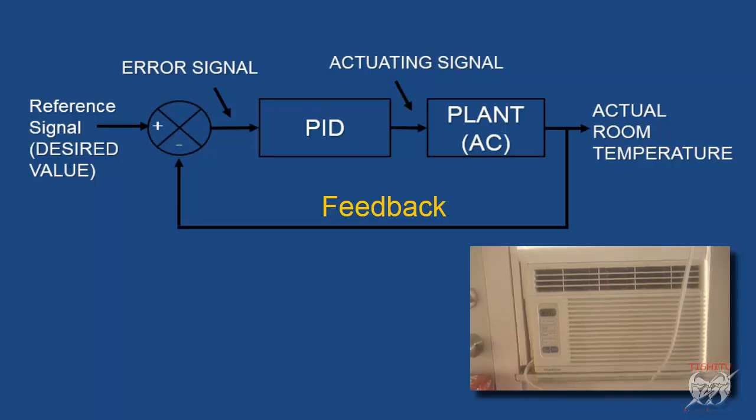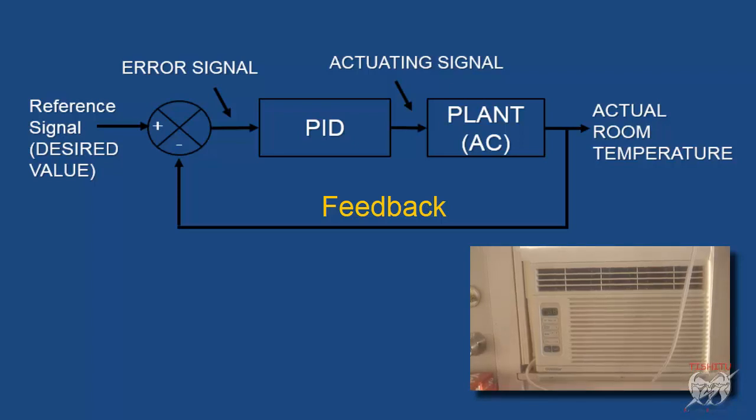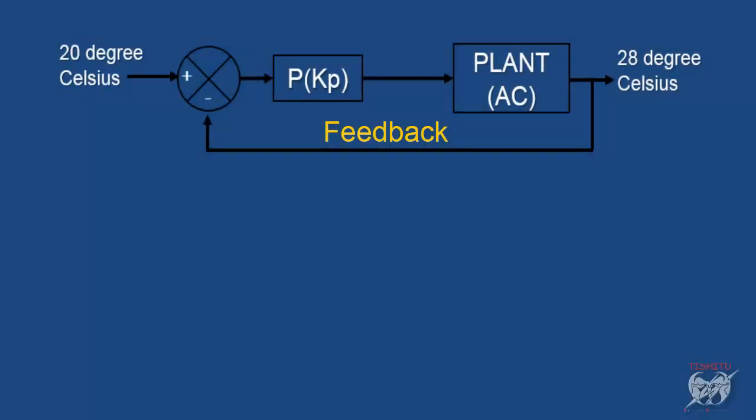Once AC gets on, in AC there is a temperature sensor which continuously measures room temperature. Assume that room temperature presently is 28 degree celsius. Now we set desired temperature 20 degree celsius. So using feedback it continuously compared with room temperature and according to that error signal generate.